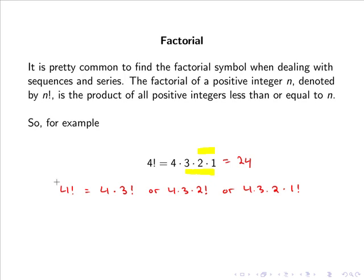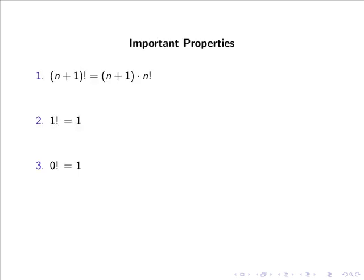The fact that we can express 4 factorial as 4 multiplied by 3 factorial leads on to a very important property. One property we will see a lot in sequences and series is that n plus 1 factorial can be expressed as n plus 1 multiplied by n factorial.